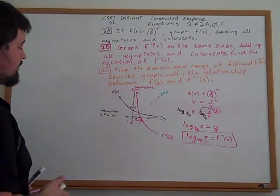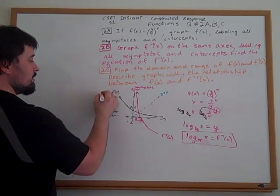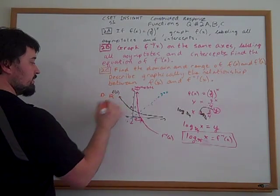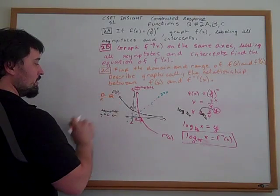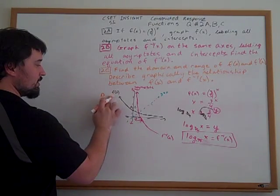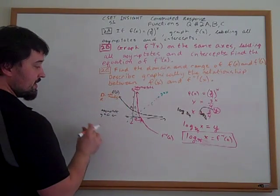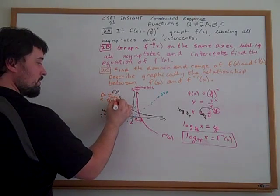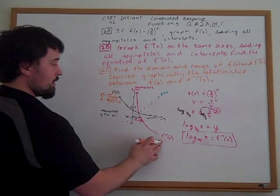Well, the domain here for x was all reals. There was no limit. So the domain is all reals. Now the range, let's go ahead and just put all reals. The range is going to be that f of x has to be greater than zero because of the asymptote. This flip flops for our inverse function.